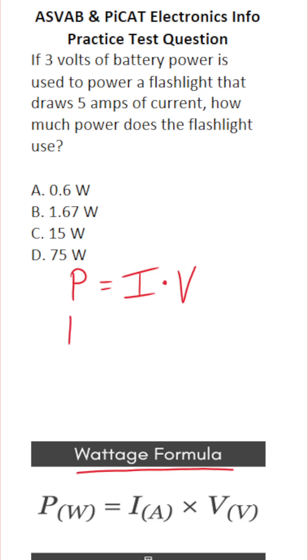We're going to be solving for power, so we're going to leave P as is. We know this flashlight draws five amps of current, so I is five. And we have three volts of power, so volts is going to be three. P is equal to five times three or fifteen.